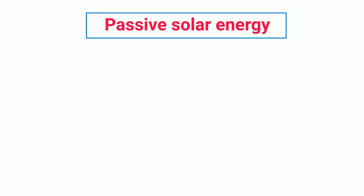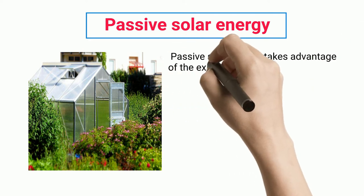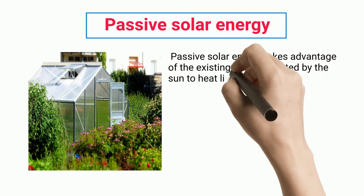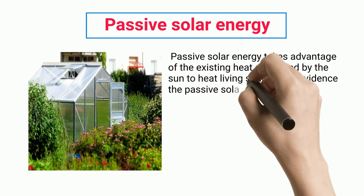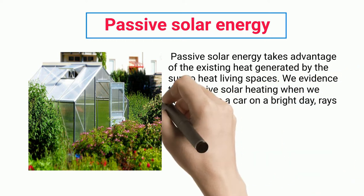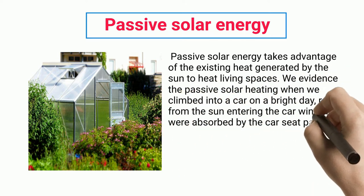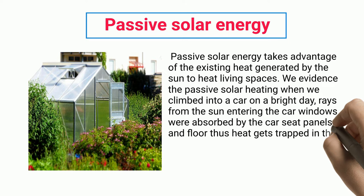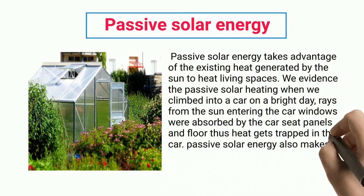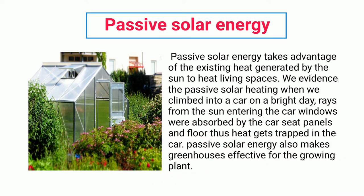Passive solar energy takes advantage of the existing heat generated by the sun to heat living spaces. We see passive solar heating when we climb into a car on a bright day — rays from the sun entering the car windows are absorbed by the seats, panels, and floor, trapping heat inside. Passive solar energy also makes greenhouses effective for growing plants.